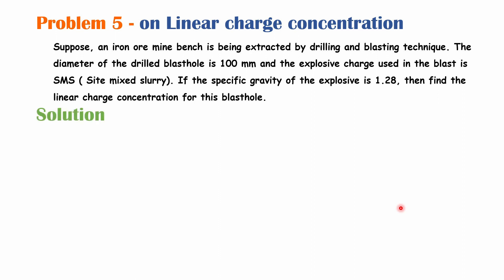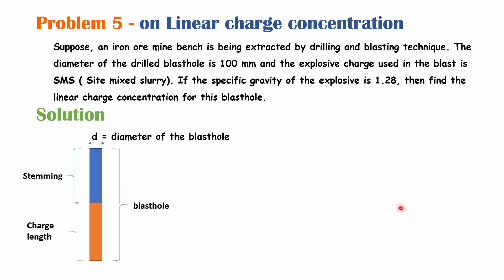Here the diameter D of the blast hole is provided. We don't know the amount of explosive in the hole, but we are given the diameter and specific gravity of the explosives. The specific gravity is the ratio of the density of the explosive to the density of water under standard conditions. We are comparing the density of explosives to a reference density, which is the density of water.